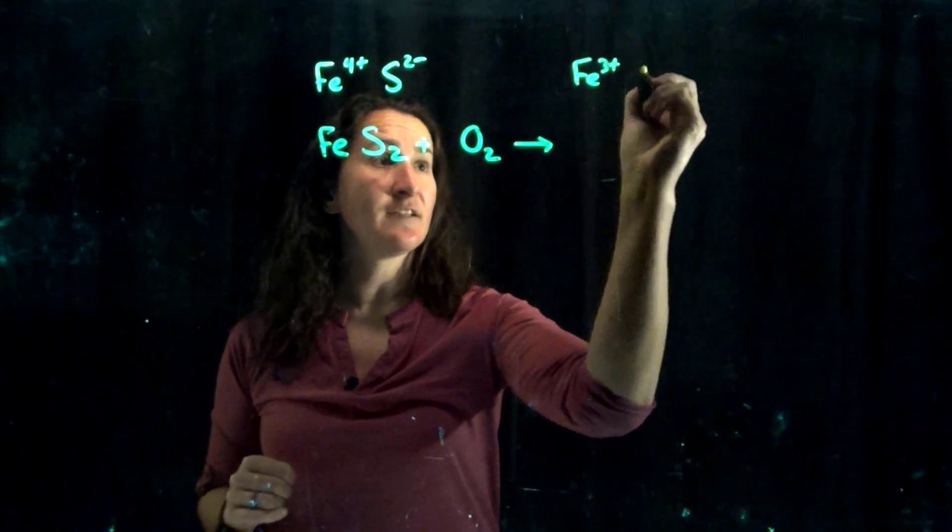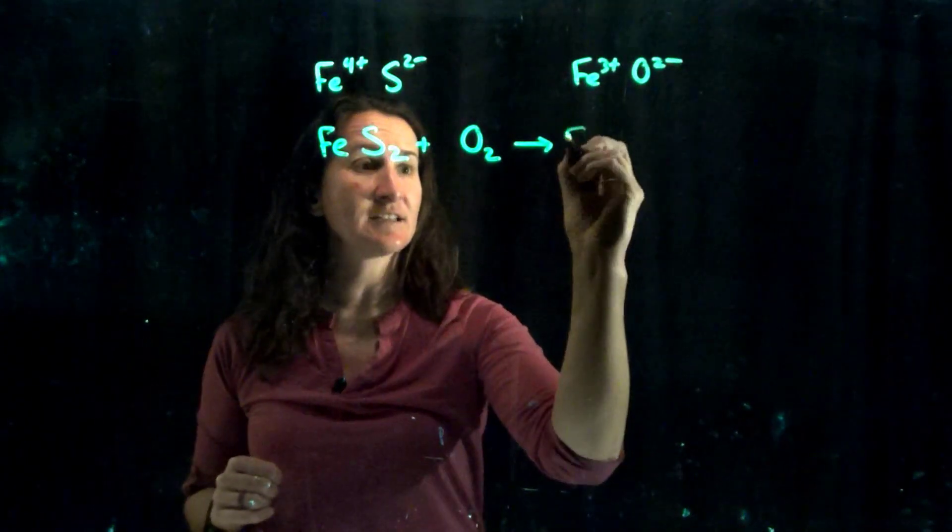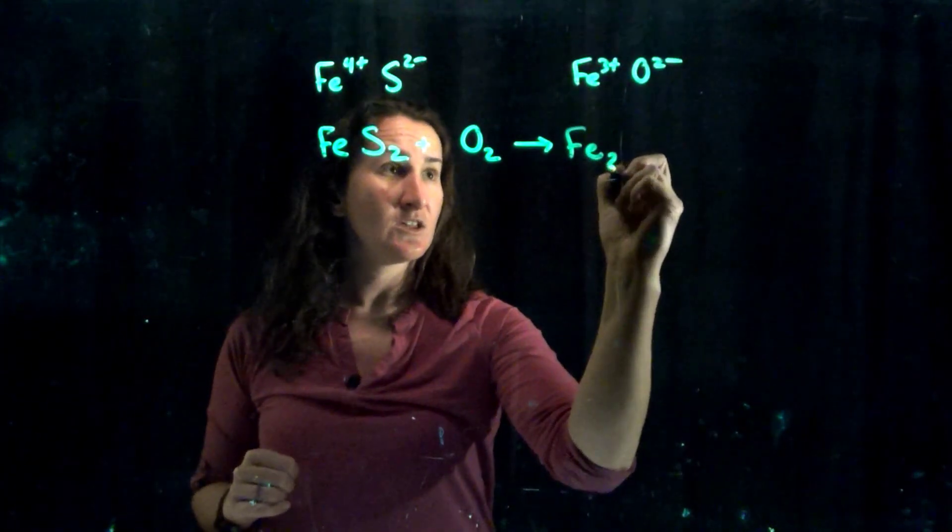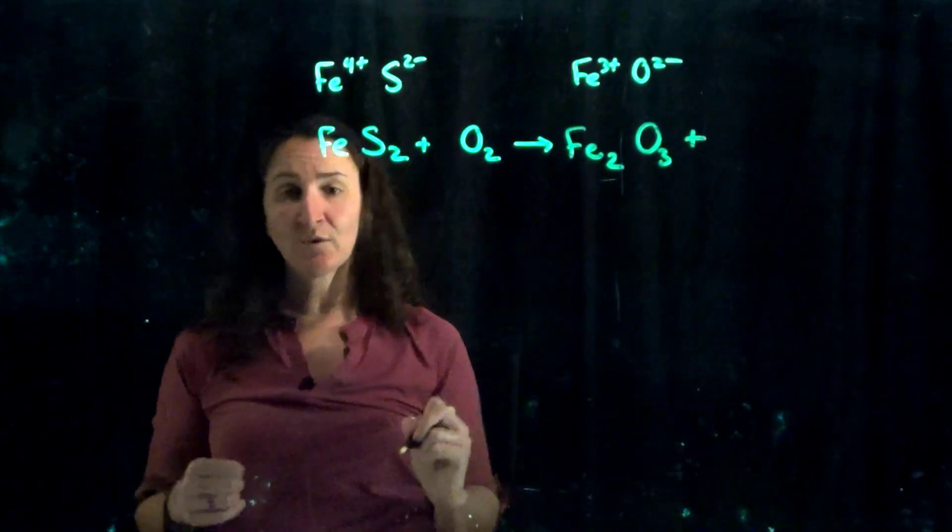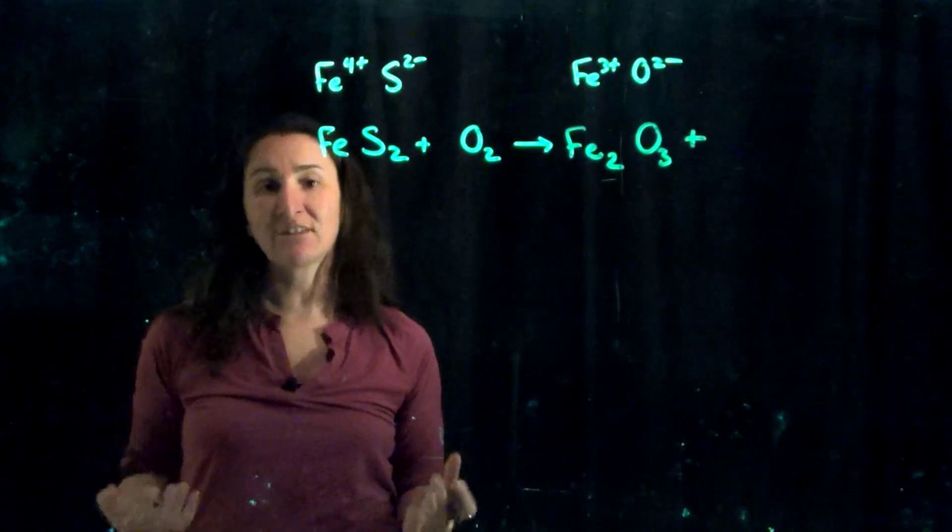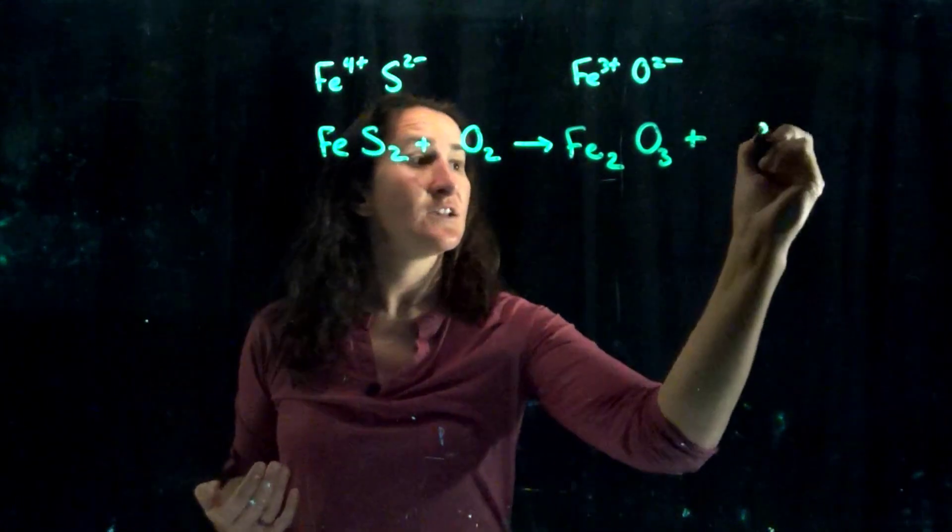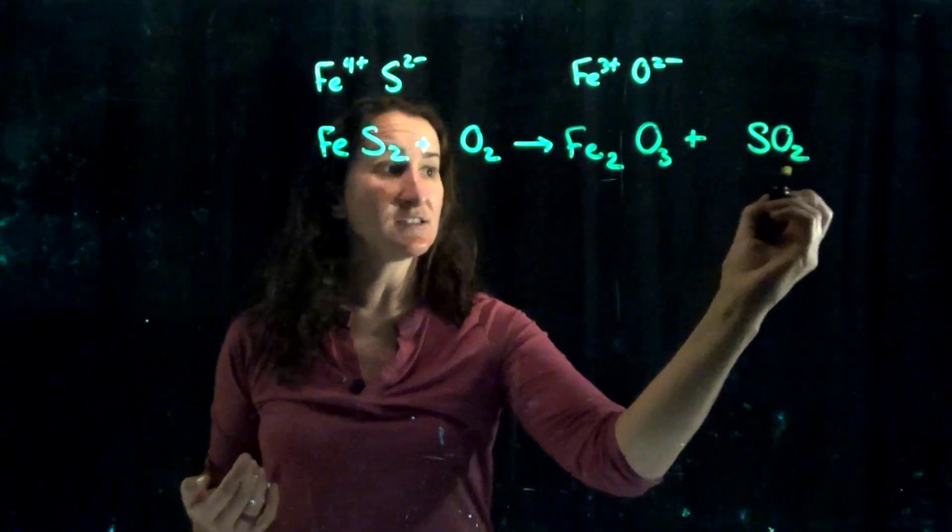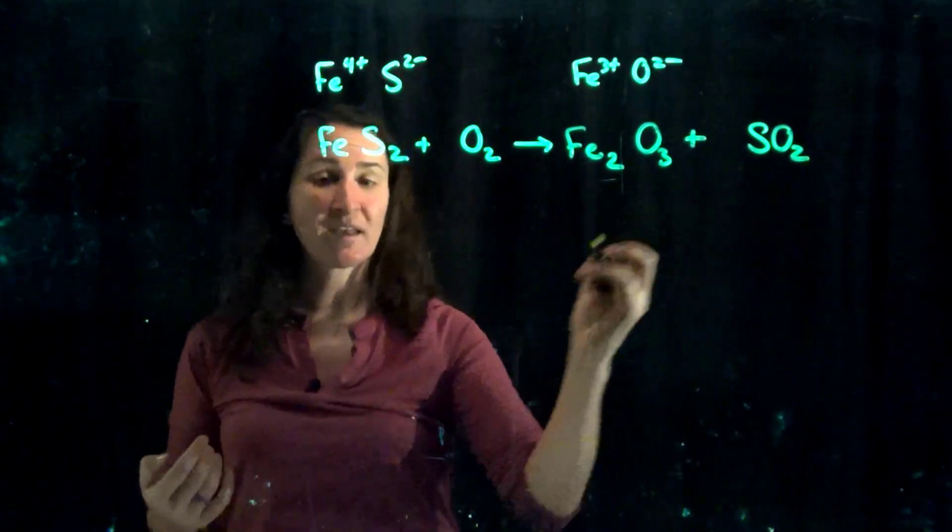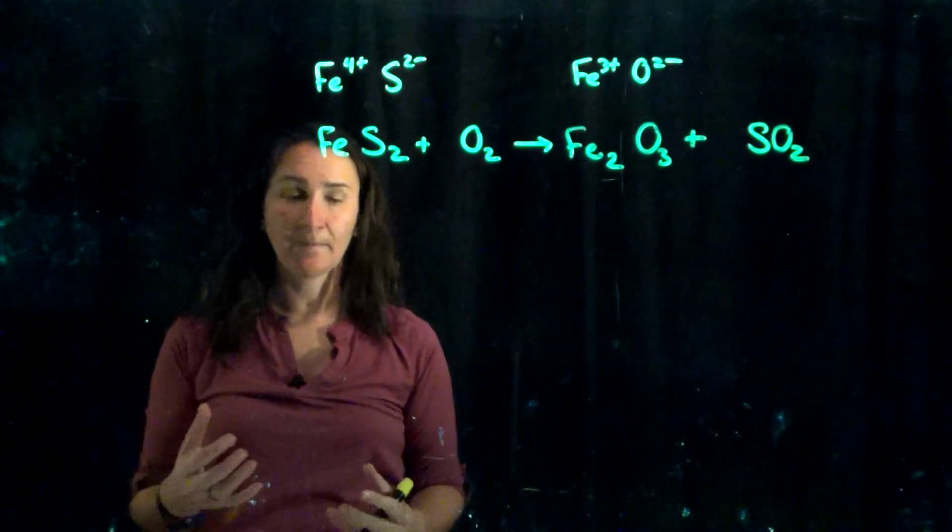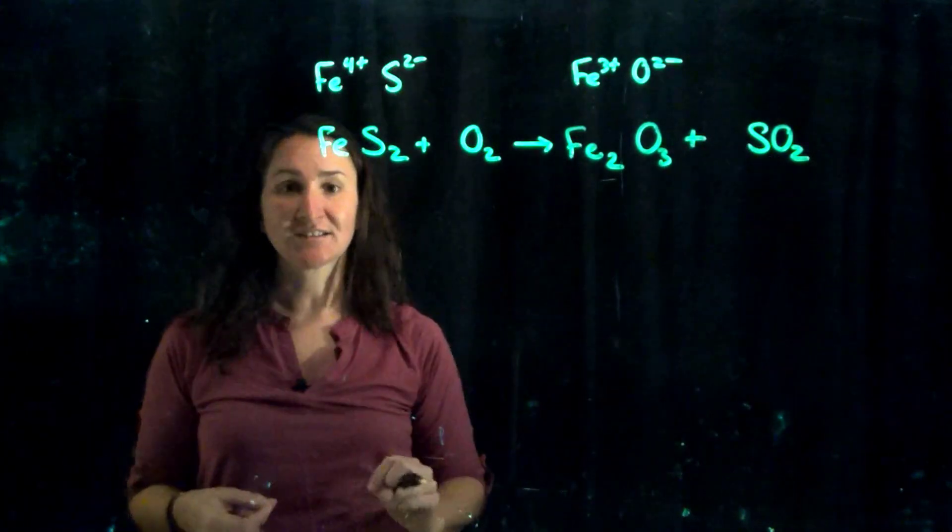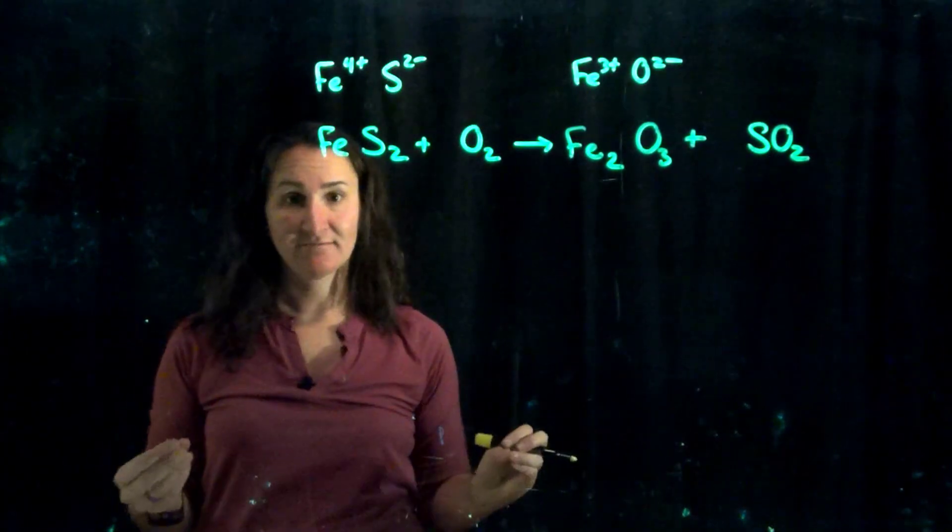Plus oxygen gas, remember is diatomic so plus O2, yields iron three oxide. So if it is iron three plus, plus oxygen two minus, it's going to be Fe2O3 plus sulfur dioxide. Why does it have that die in there? Because sulfur plus two oxygens, that's going to be covalently bound so it gets those prefixes there of di, tri, mono, etc. So sulfur dioxide just like hydrogen monoxide.